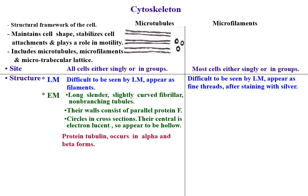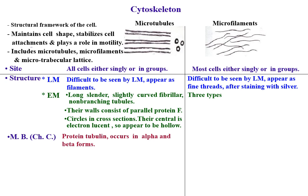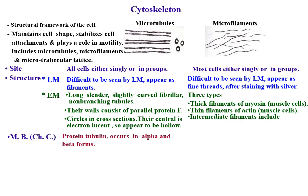Microtubules are formed of the protein tubulin, which occurs in alpha and beta forms — this constitutes their molecular biology or chemical composition. By electron microscope, three types of microfilaments are distinguishable: thick filaments of myosin, present in muscle cells; thin filaments of actin, also present in muscle cells; and intermediate filaments, which include five types that are indistinguishable structurally but can be identified by immunohistochemical means.